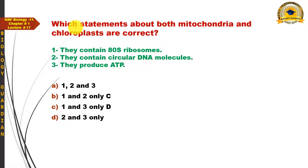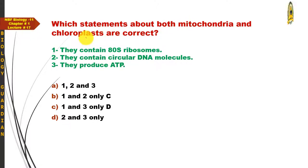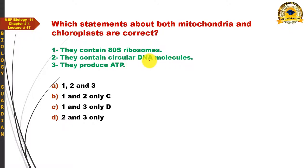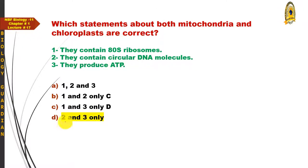For the MCQ asking which statements about both mitochondria and chloroplasts are correct: the statement that they contain 80S ribosomes is incorrect — both contain 70S ribosomes. The statements that they contain circular DNA molecules and that they both produce ATP are correct. So the answer is statements 2 and 3 only.